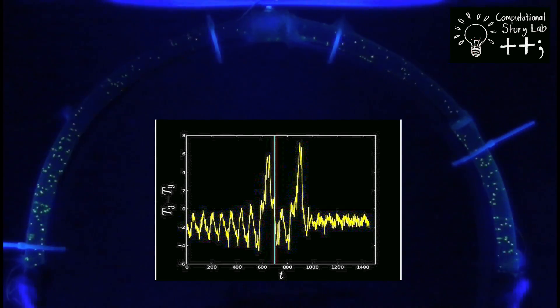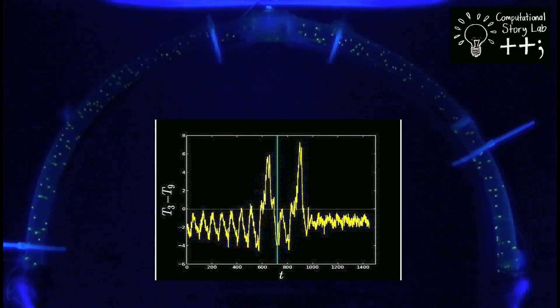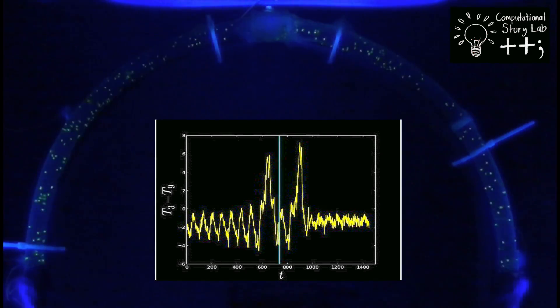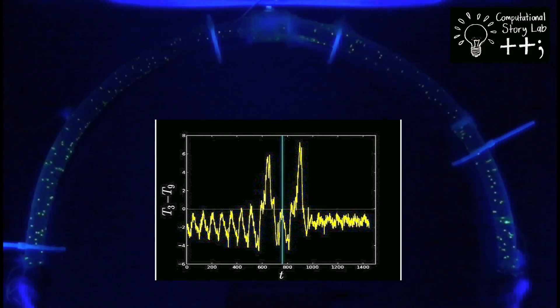An instability in the flow leads the fluid to speed up and slow down with increasing amplitude before reversing direction.